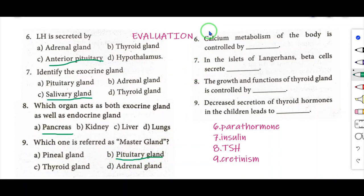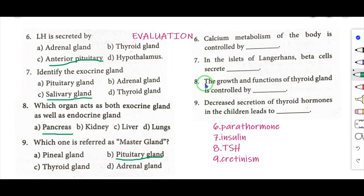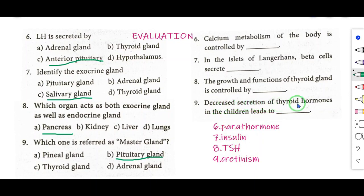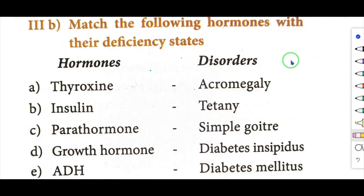Fill in the blanks. Question 6: Calcium metabolism of the body is controlled by — parathormone. Question 7: In the islets of Langerhans, beta cells secrete — insulin. Question 8: The growth and functions of thyroid gland is controlled by — TSH (thyroid stimulating hormone). Question 9: Decreased secretion of thyroid hormones in children leads to — cretinism.